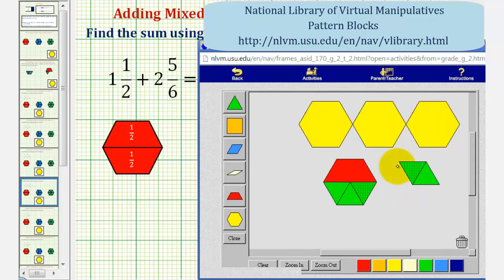Now we can perform some exchanges. Notice how we can exchange one red pattern block and three green pattern blocks for one yellow pattern block, which would give us one whole.